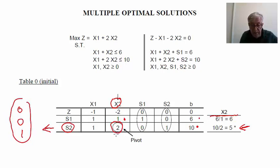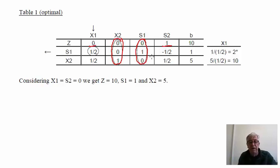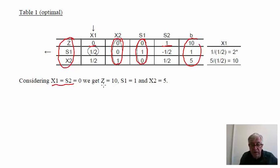After implementing the transformations, we obtain a new table with x2 as the new basic variable. This table is optimal because we don't have negative coefficients in the z row for the non-basic variables. Reading the solution by setting x1 and s2 equal to zero, we get z equal to 10, x1 equal to 1, and x2 equal to 5.